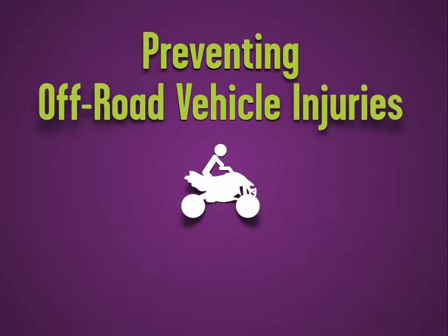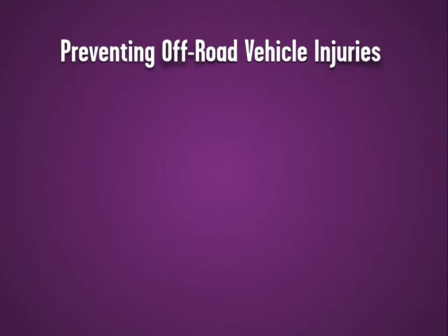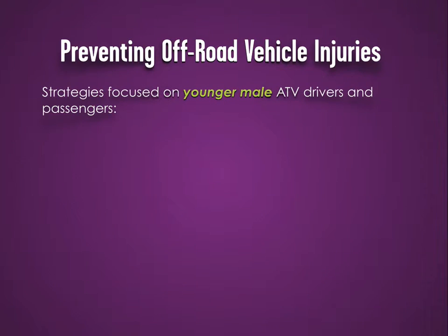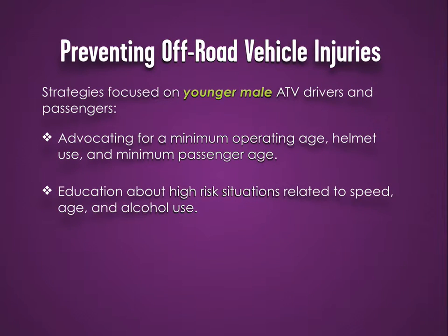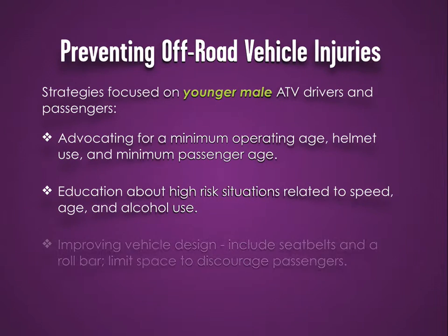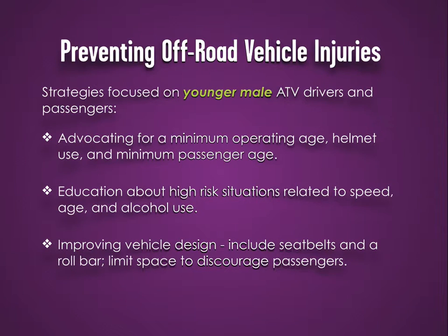Preventing off-road vehicle injuries. Strategies here relate to reducing injury among younger male ATV drivers and passengers. These include advocating for a minimum operating age, helmet use, and minimum passenger age. Educating parents, drivers, and communities about high-risk situations such as driving at high speeds, young ages, and alcohol use. Improving vehicle design to include seat belts and a roll bar, and discouraging passengers by limiting space.